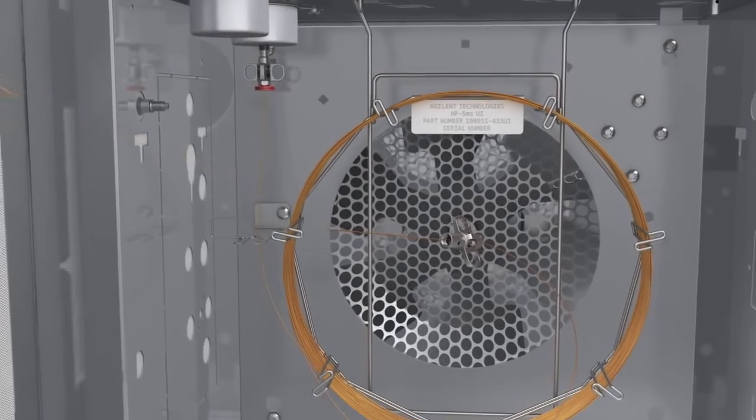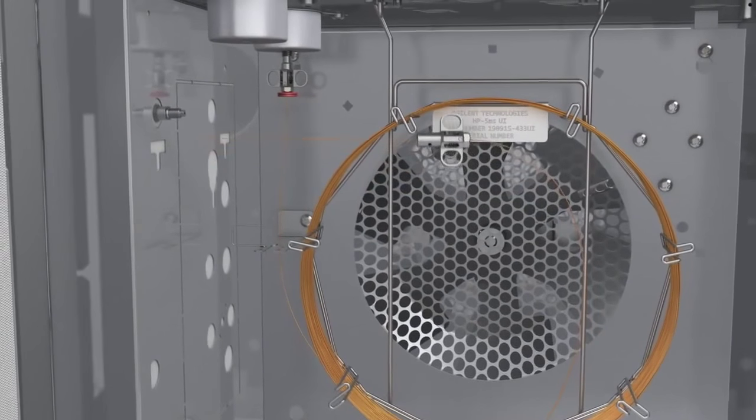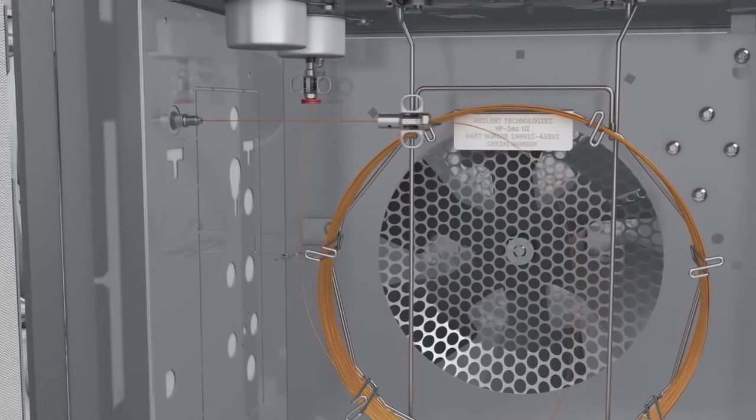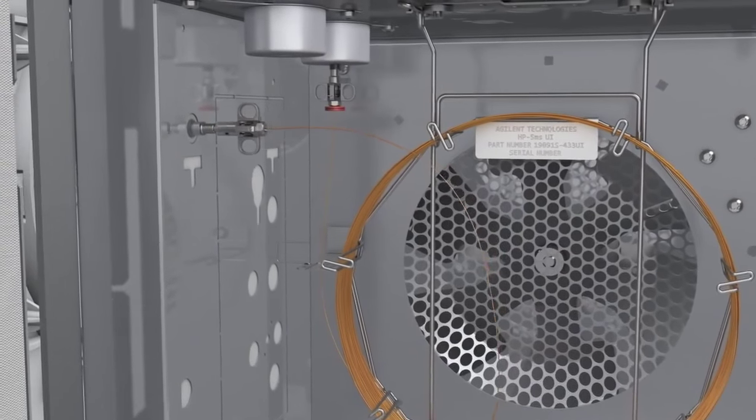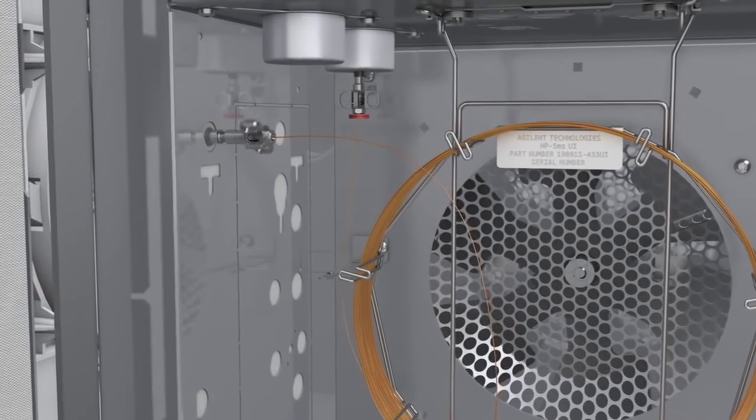When using a short graphite polyamide ferrule and the MS interface version of the self-tightening column nut, the MS interface fitting remains leak-free even after many cycles.